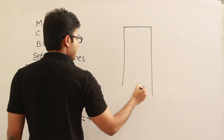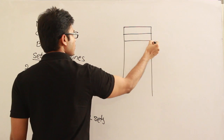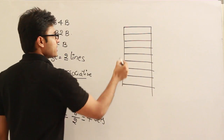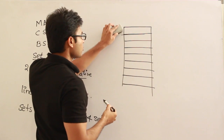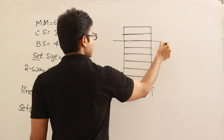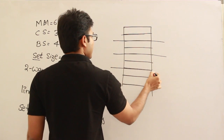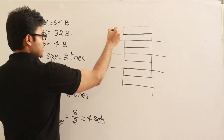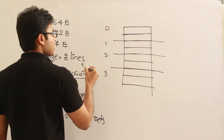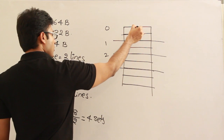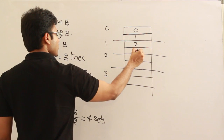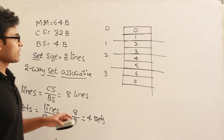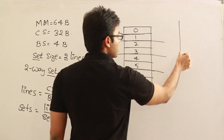In the cache we have 8 lines — line 0, 1, 2, 3, 4, 5, 6, 7. Every two lines are combined into one set, giving us 4 sets: set 0, set 1, set 2, and set 3.